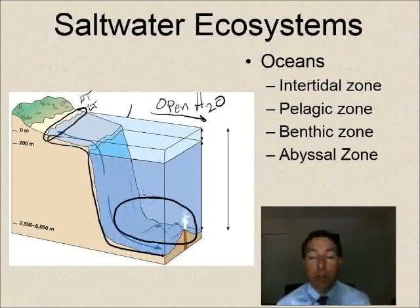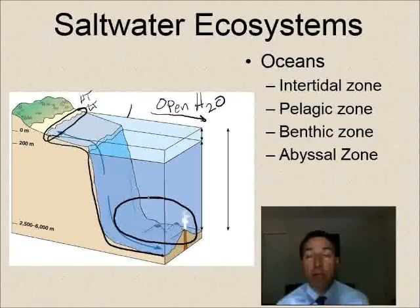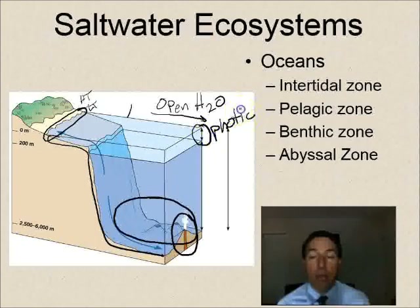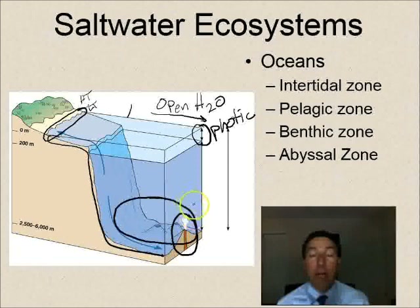The deepest zone where there is no light is the abyssal zone — the deepest part of the ocean. It is very cold and very dark, so organisms there use bioluminescence to hunt prey and find mates. Also at the very bottom in some places we have hydrothermal vents. Primary productivity in the ocean normally only occurs in the photic zone where photosynthesis can happen.